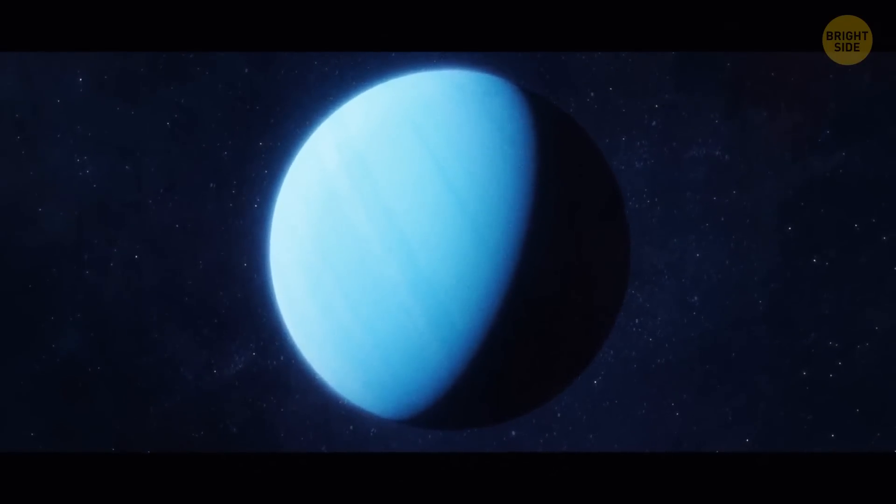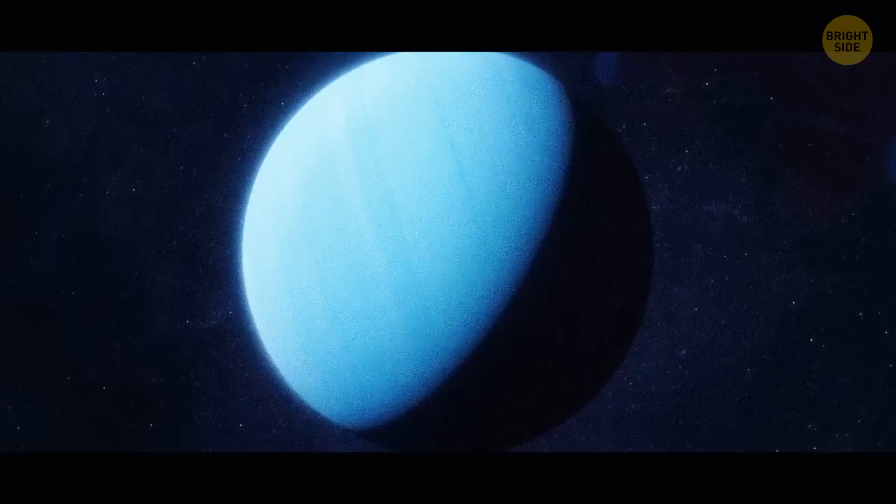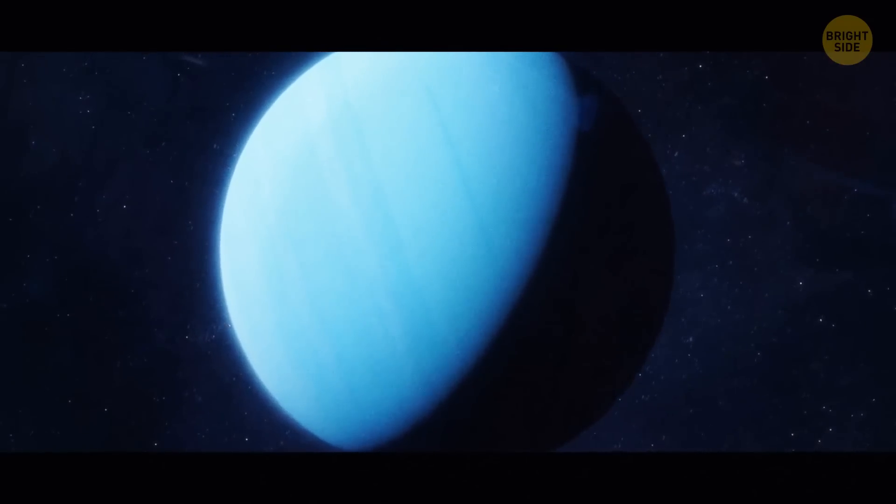A day on Uranus lasts 17 hours, 14 minutes, and 24 seconds. But get this, the planet has a tilt of around 98 degrees, and that makes a season on the gas giant last 21 Earth years.